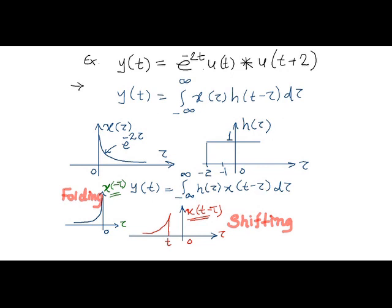Thus a folded x of tau signal is plotted as shown. Followed by that, a shifting operation is performed over a folded signal x of tau.